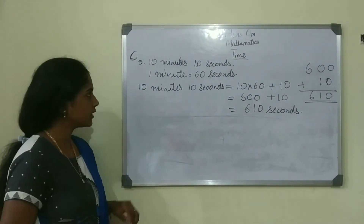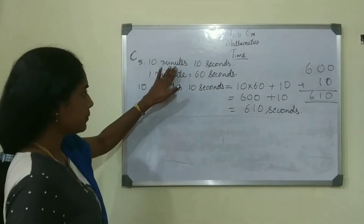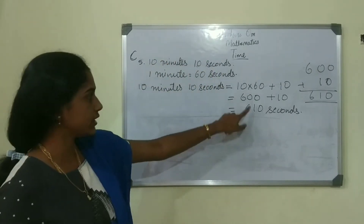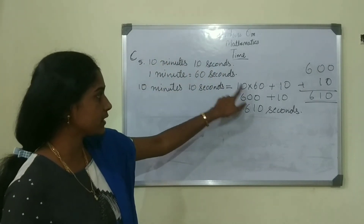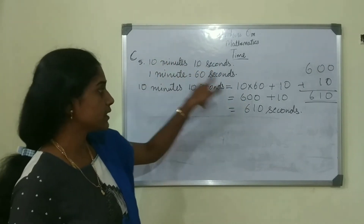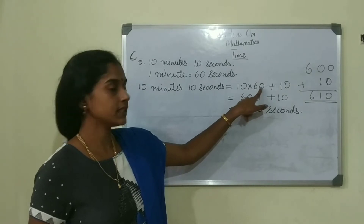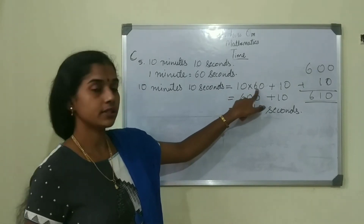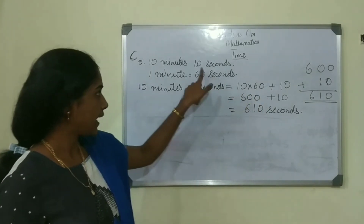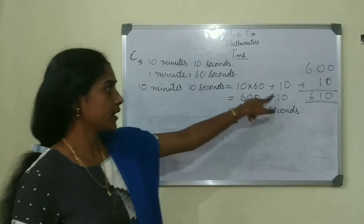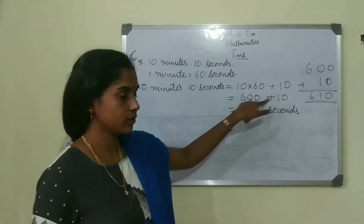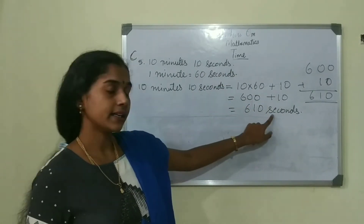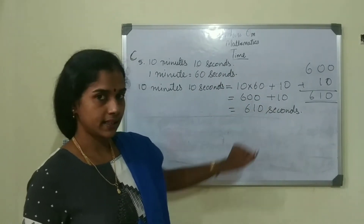10 minutes 10 seconds: first we converted 10 minutes into seconds. 10 into 60 is 600, then added 10 seconds. So 600 plus 10 is 610 seconds.